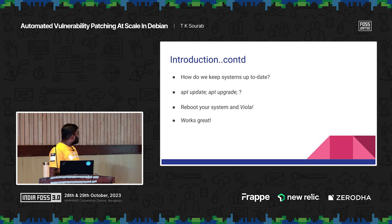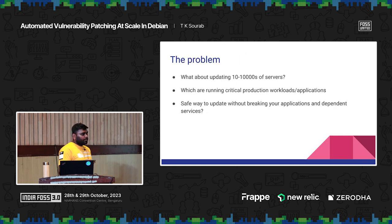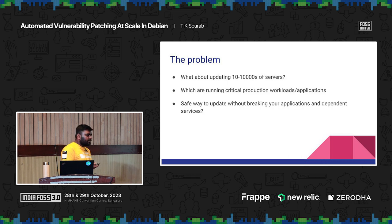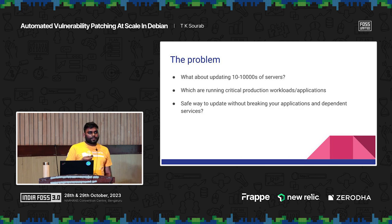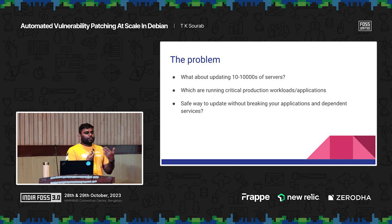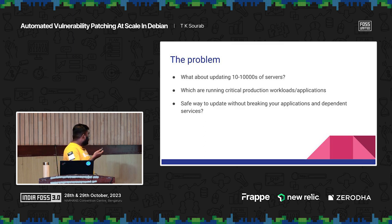This works great, but the problem is: what about when you want to update 10,000 or more systems? Is there a safe way to do that? These systems are running critical workloads — you cannot just reboot them. You have to go through a maintenance cycle, wait one or two months if you have a large number of systems. By that time, packages get updated or new exploits come up; there are new vulnerabilities every single day. How do we do that without breaking your applications?